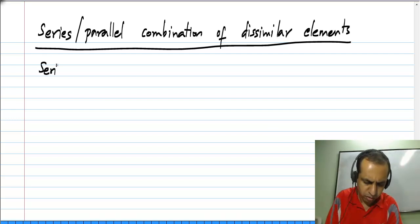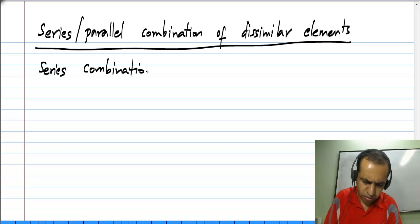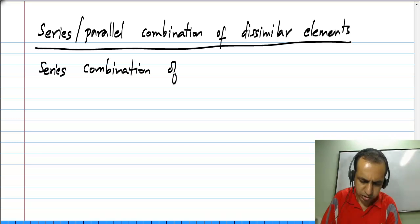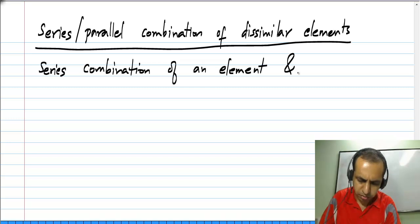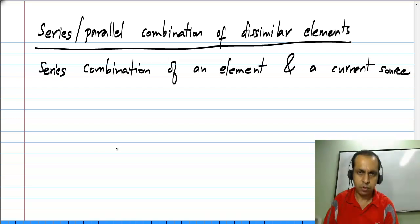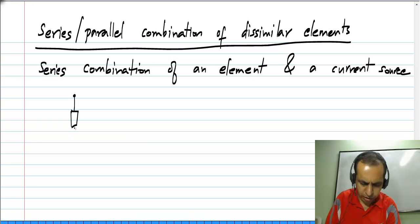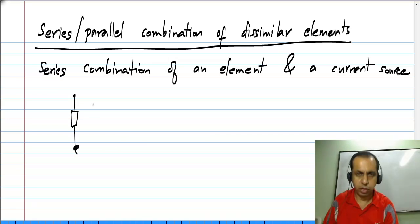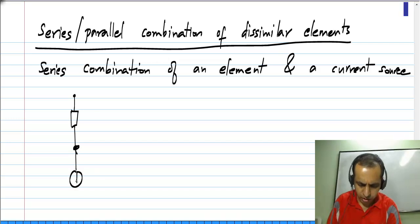First, let us look at the series combination of an element and a current source. That is, we can have any element — it could be a resistor, an inductor, a voltage source — and in series with that we have a certain current I.